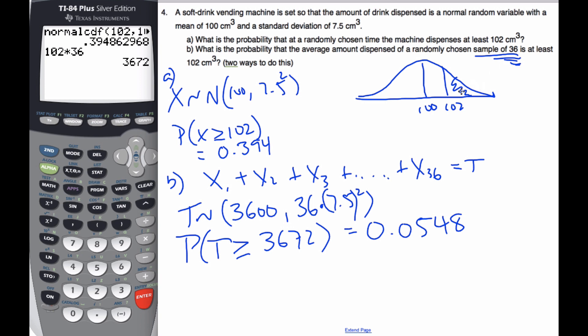But if I have a sample of 36, I can also use, as a second way, I can use the central limit theorem. And this is key.